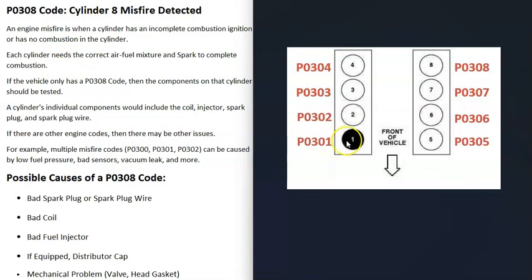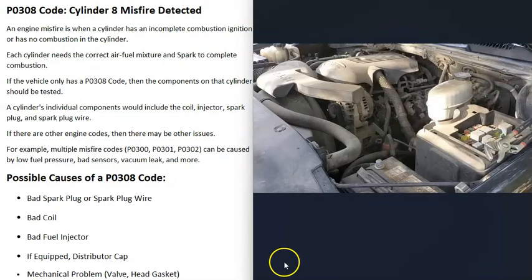A P0308 code points to the number 8 cylinder. A P0301 would be cylinder 1, a P0302 would be cylinder 2, and so on. If you're only getting this P0308 code, then very likely a component just failed on cylinder 8 — something like a bad injector or a bad coil specific to that cylinder. But if you're getting multiple misfire codes like a P0300, P0301, or P0302, that points to something affecting the whole engine, like a bad fuel pump, a bad sensor, or a vacuum leak.